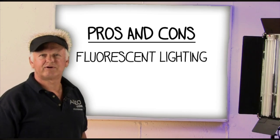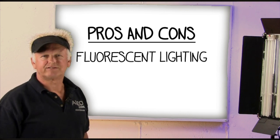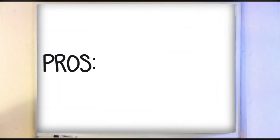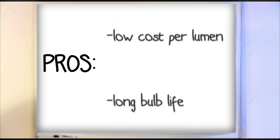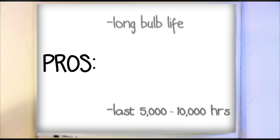And now let's review the pros and cons of fluorescent lights. The pros. They're of high availability and they're low cost per lumen. They have a long bulb life of between 5000 and 10,000 hours.